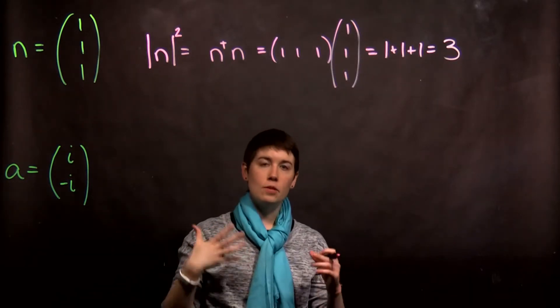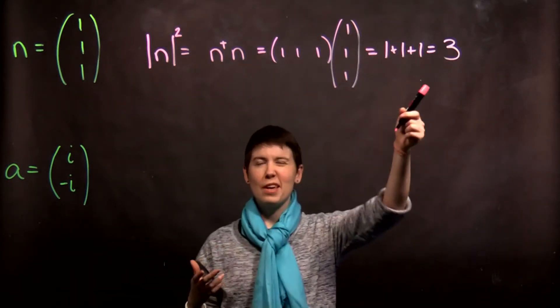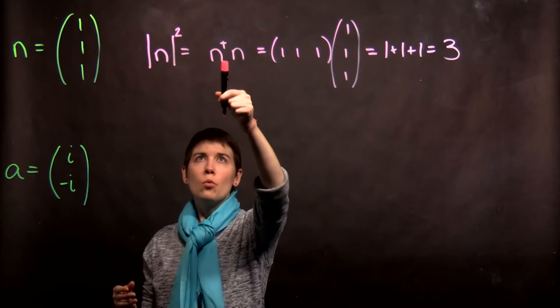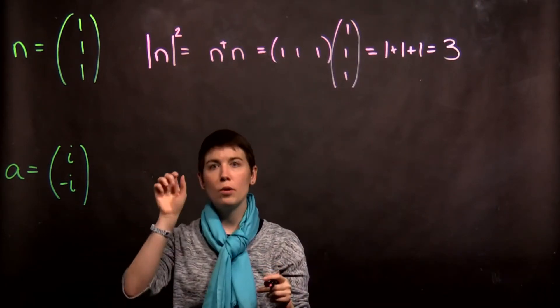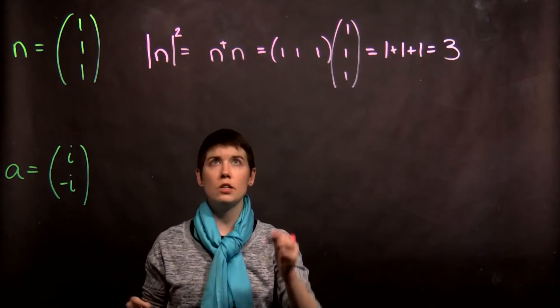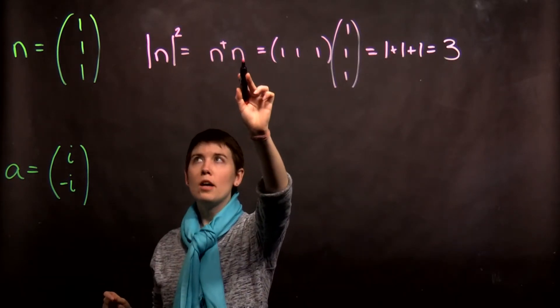Now, to find its magnitude, I'm going to start by saying its magnitude squared. We then take this n-dagger, which is going to be the transpose and the complex conjugate, and multiply it by itself.